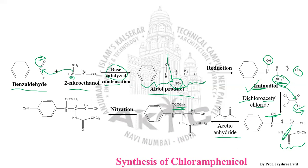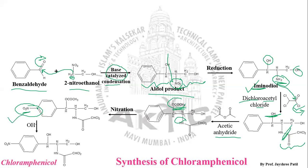We have now protected both the OH and NH2 groups with acylated moieties. Next comes nitration — it is a straightforward reaction where the incoming electrophile acquires the nitro position at the para position, that is the fourth position. After nitration we obtain this structure.